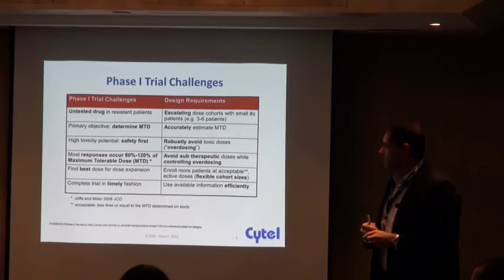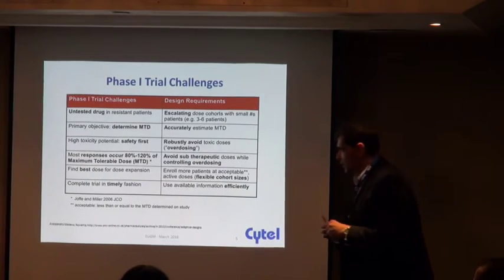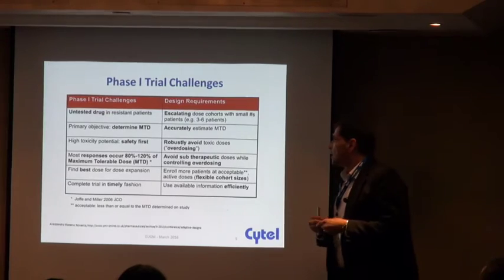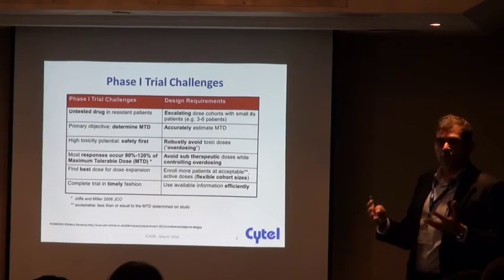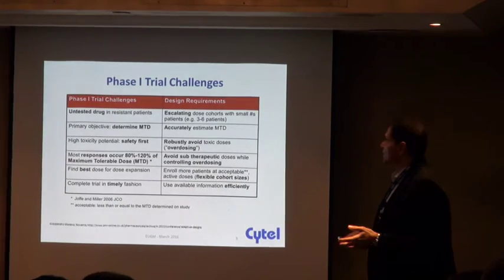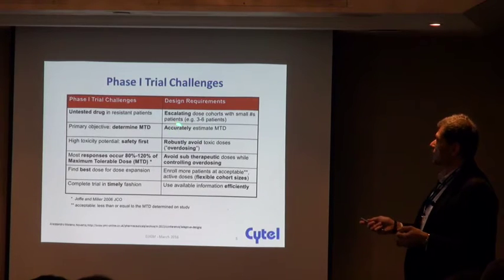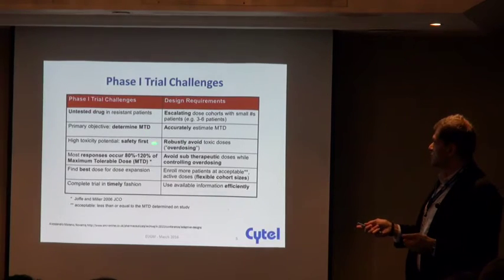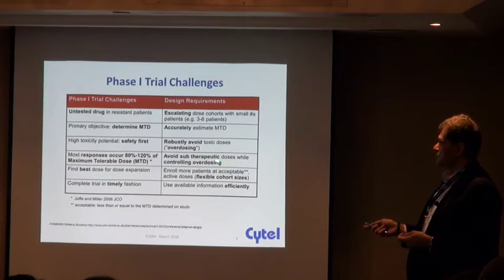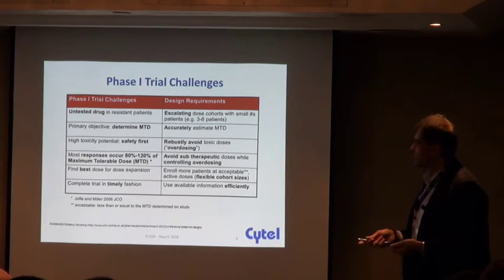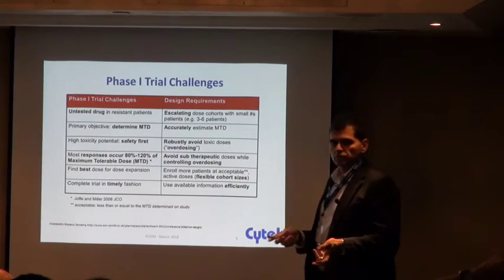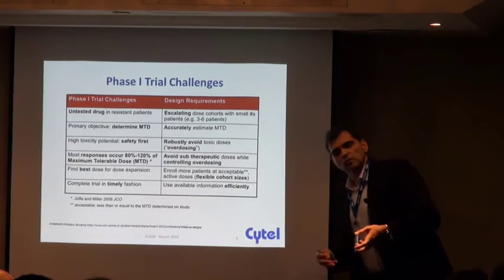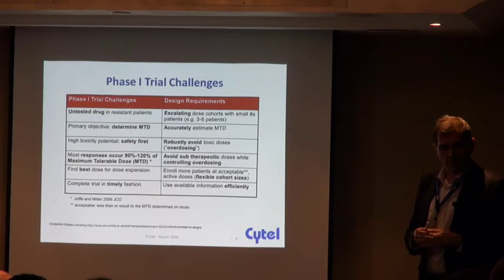This slide is taken from one of these talks from Alessandro Matano at Novartis, where they list the different challenges associated with Phase 1 trials and the different design requirements. What we want to do is accurately estimate the MTD, avoid as much as possible overdosing subjects, avoid also subtherapeutic doses while controlling overdosing, enroll more patients at acceptable doses, and use all available information efficiently.